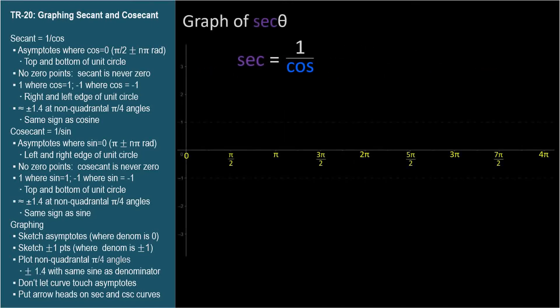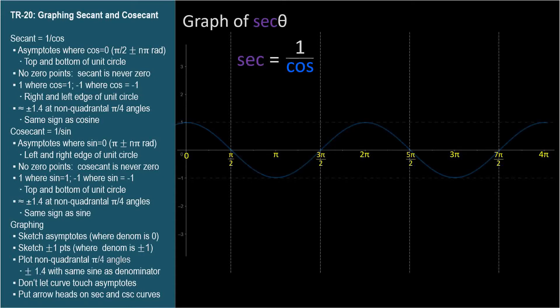Secant equals 1 over cosine, so secant is undefined at these angles. Secant has the same asymptotes as tangent, because both denominators are cosine. At angles where the cosine is 1, secant is 1, because 1 divided by 1 is 1. And at angles where cosine is negative 1, secant is also negative 1, because 1 divided by negative 1 is negative 1.